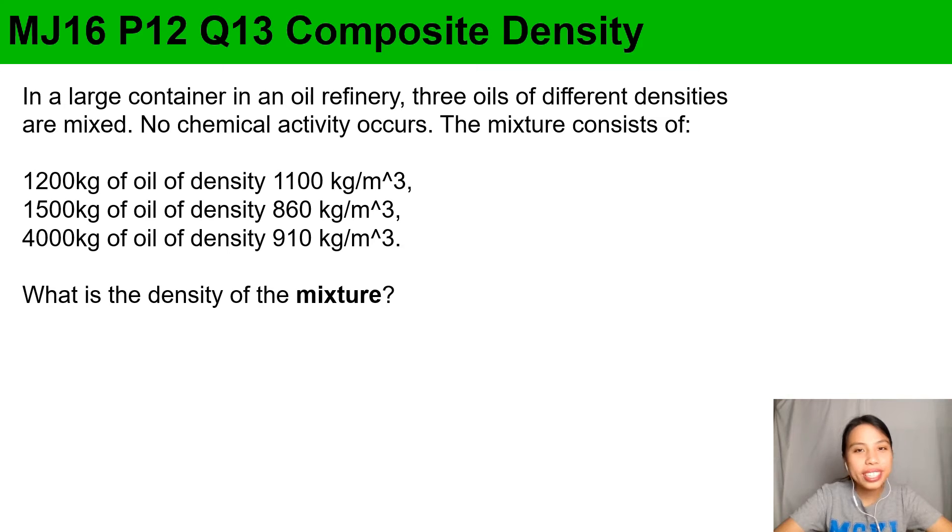It would be really nice if density questions were just as simple as that - just mass over volume, done. But in real life, if I say what's the density of this calculator - got plastic, got metal, got glass - how do you find the density? So that's what we call composite density when there are different densities all put together to form one object. Here's an example: in a large container in an oil refinery, three oils all mixed together. What's the density of the mixture?